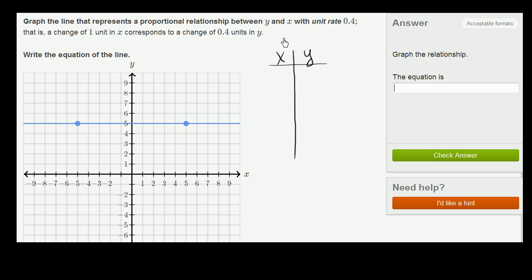When we're thinking about proportional relationships, that means that y is going to be equal to some constant times x. So if we have a proportional relationship, if you have 0 x's, it doesn't matter what your constant is, you're going to have 0 y's. So the point 0, 0 should be on my line right over there.